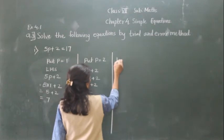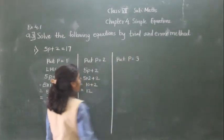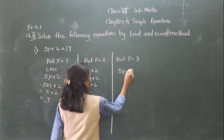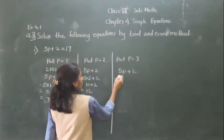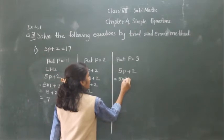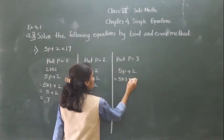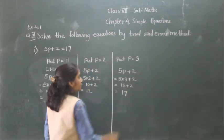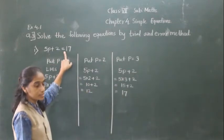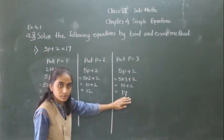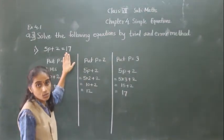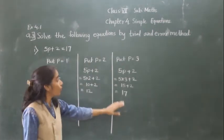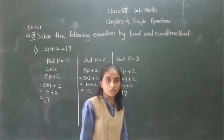Now put P equal to 3. The equation 5P plus 2 gives 5 into 3 plus 2, which is 15 plus 2 equals 17. We got LHS equal to RHS — both equal 17. So P equal to 3 is the solution of the given equation.